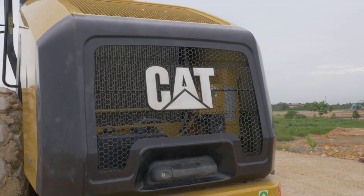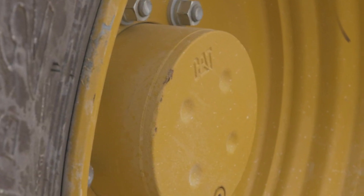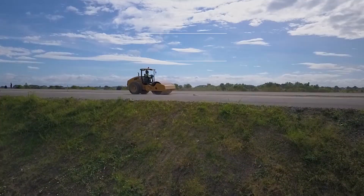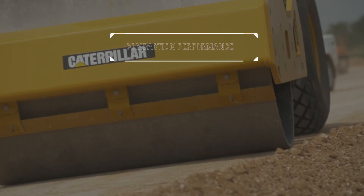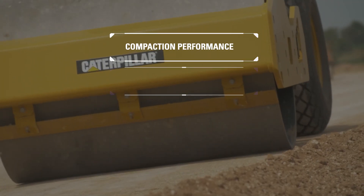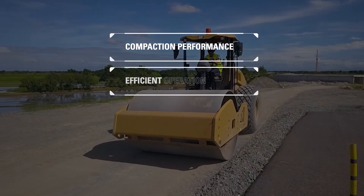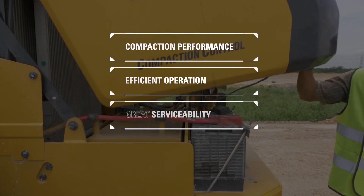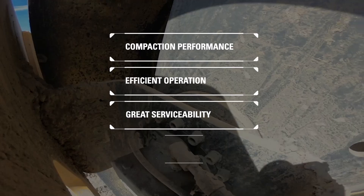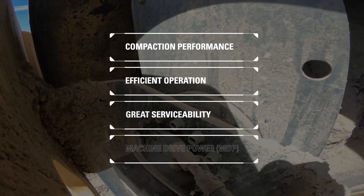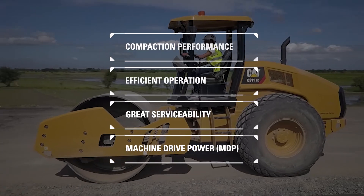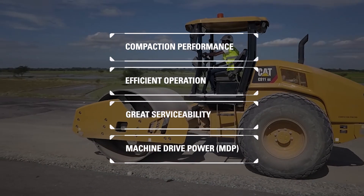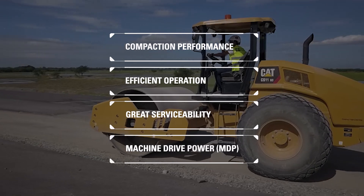Cat GC series vibratory soil compactors offer customers class-leading compaction performance, efficient operation, great serviceability, and exclusive compaction technology called Machine Drive Power, or MDP.